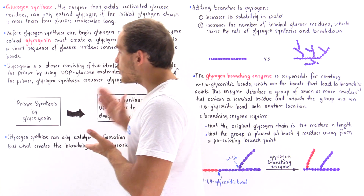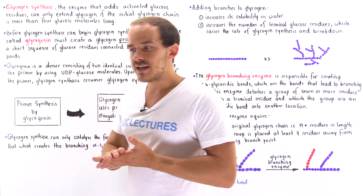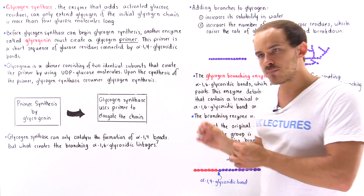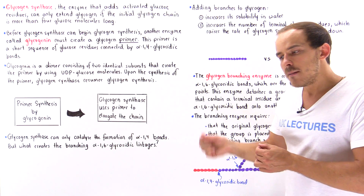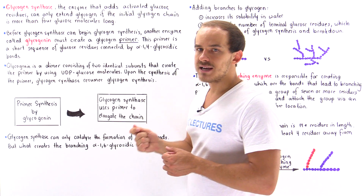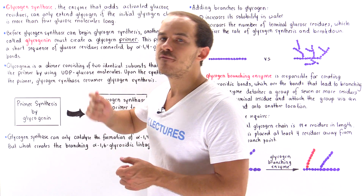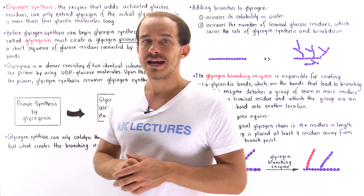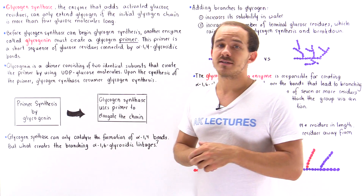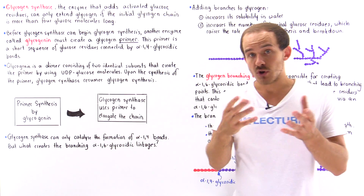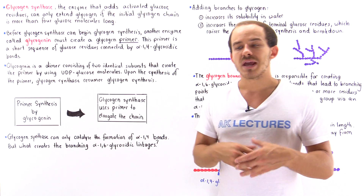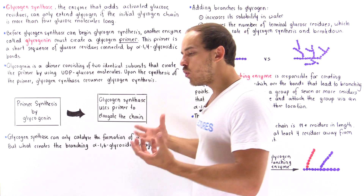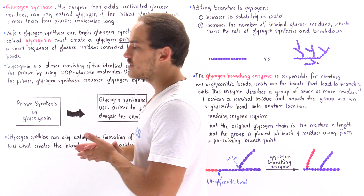The thing about glycogen synthase is not only does it require that primer, but it can only synthesize alpha-1,4-glycosidic bonds. It cannot create the alpha-1,6-glycosidic bonds that we also find in glycogen. So what exactly creates these alpha-1,6-glycosidic bonds?